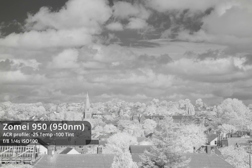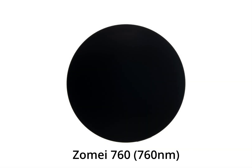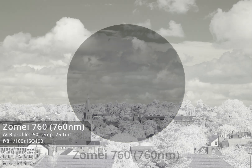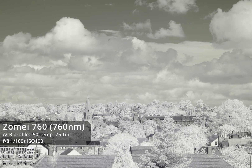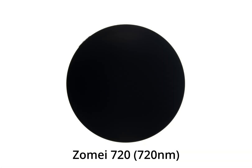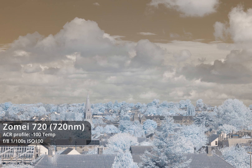Starting with a pure infrared filter, the Zomei 950nm filter gives a black and white image once white balanced. With the Zomei 760nm filter we start to see a little colour, but the image is basically monochrome — you shouldn't really see any colour with a 760nm filter so the Zomei filter is likely leaking some visible light. Moving down to 720nm we start to see quite a bit more colour, again probably getting a bit more visible light than you should with a 720nm filter.